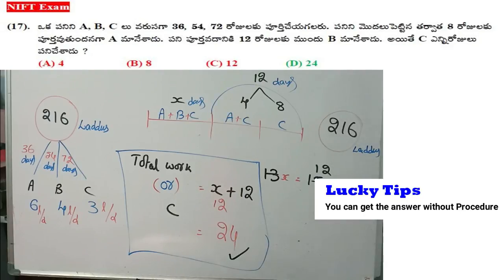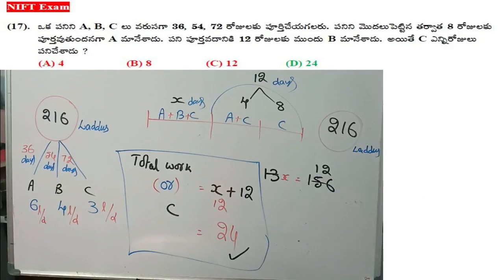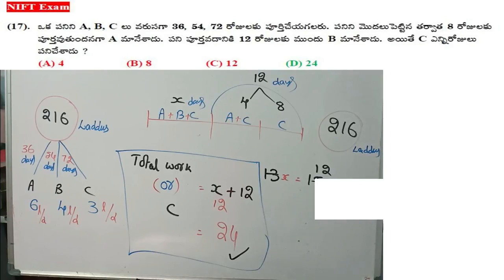But the question is: if C is equal to any row, total work — C is X plus 4 plus 8, which is directly 12 days. X plus 12 is already 12. 12 plus 12 is equal to 24. This is the procedure.